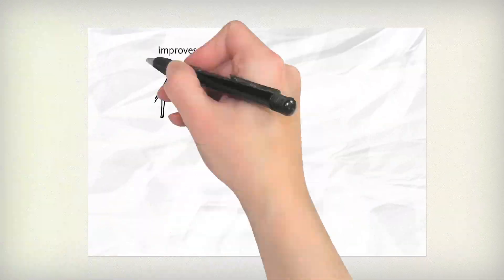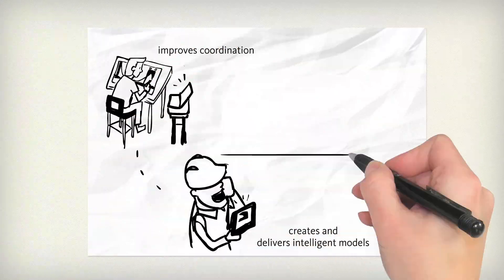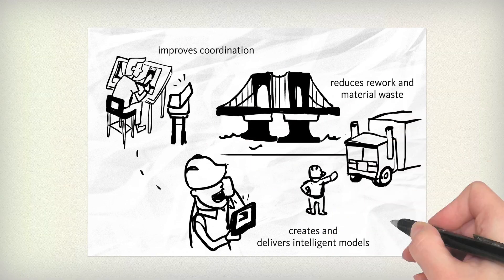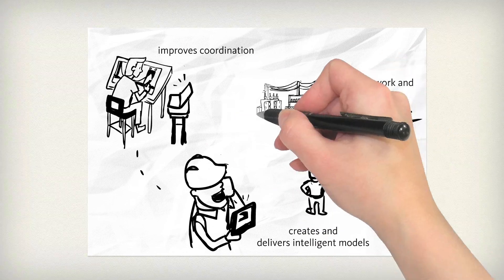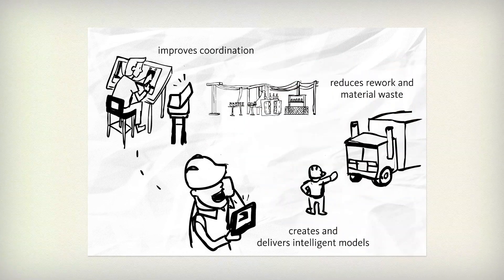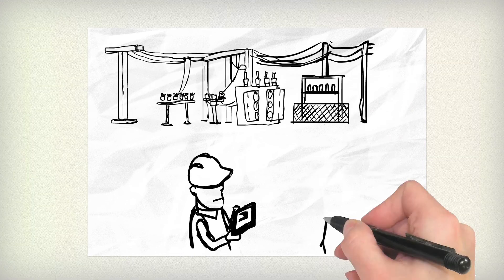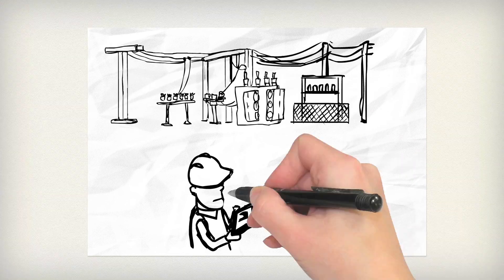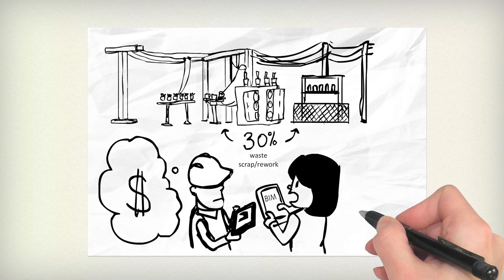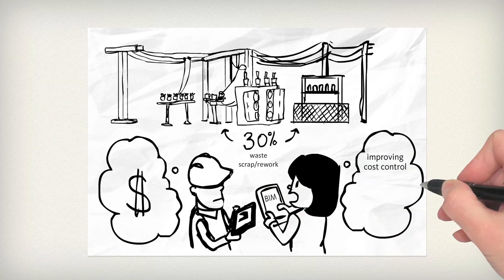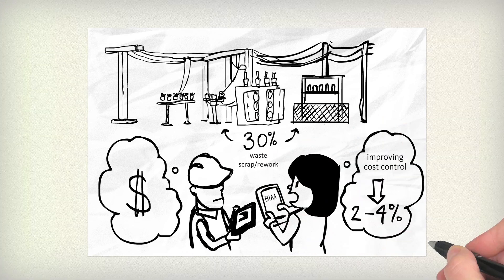It improves coordination, creates and delivers intelligent models and reduces rework and material waste. So since utilities drive some of the largest construction budgets, applying the principles of BIM as you update old and build new infrastructure could help you improve cost control and reduce construction waste below the typical 30 percent level.